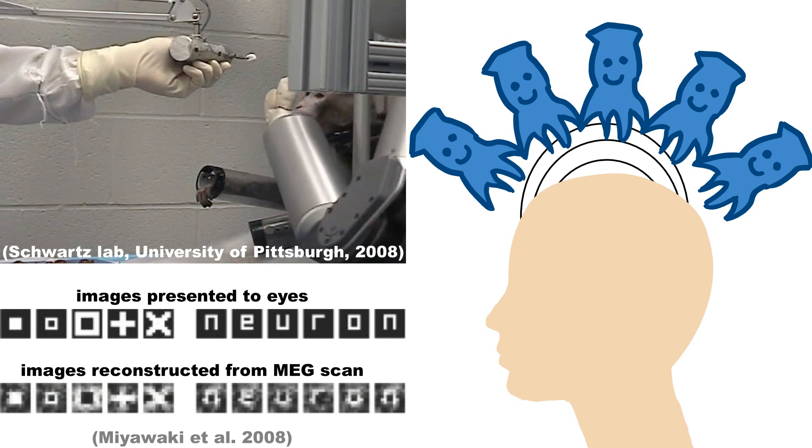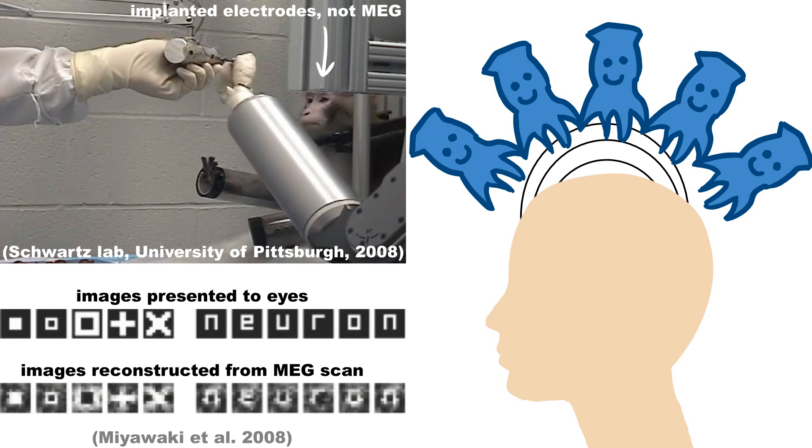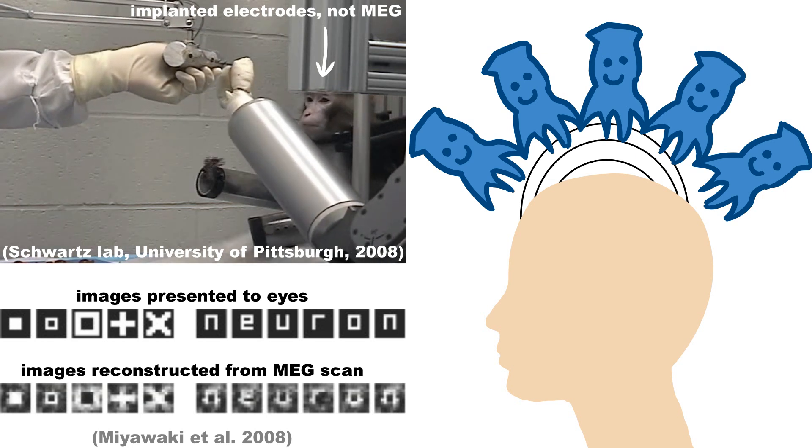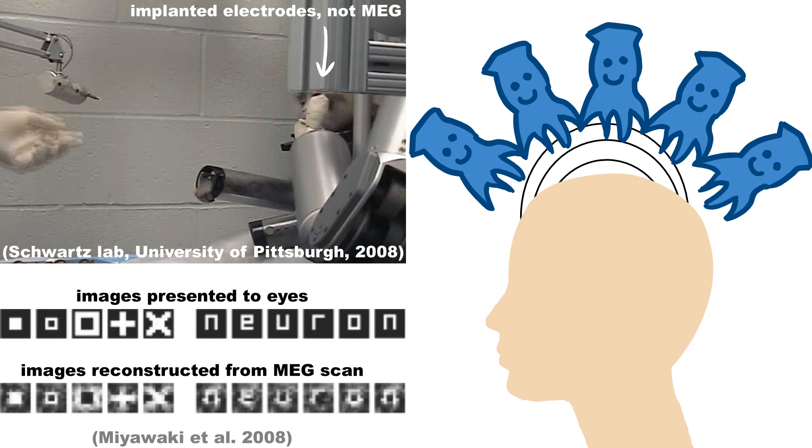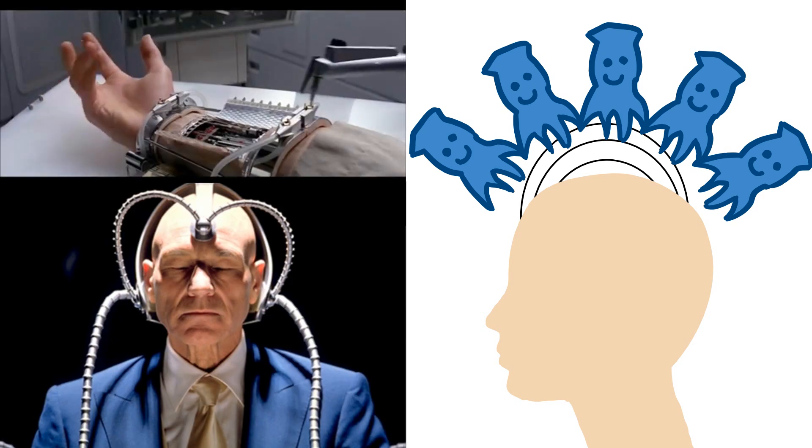Much of this research involves implants in the brain rather than MEG, but it's great when MEG can be used because it's so easy and non-invasive. The point is that technologies like MEG are taking us closer and closer to Luke Skywalker robot hands and mind reading.